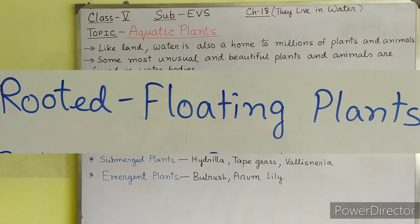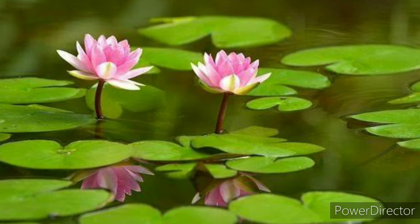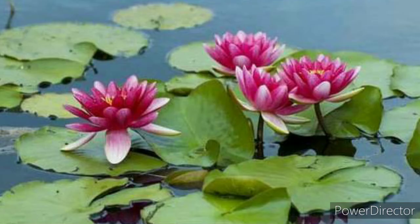Next we will learn about rooted floating plants. This picture shows rooted floating plants. These plants also float on the surface of water, but their roots are fixed to the water bed. The stems of such plants are long and hollow. This helps to bring leaves to the surface of water. The leaves of rooted floating plants are broad and floating.